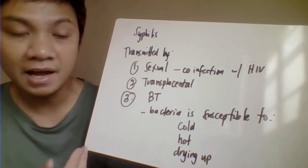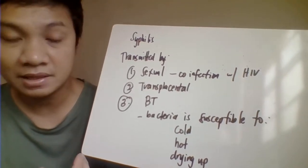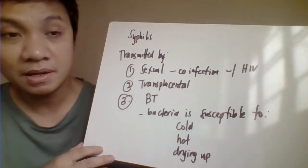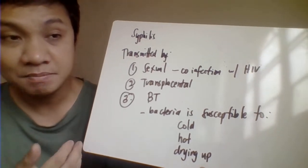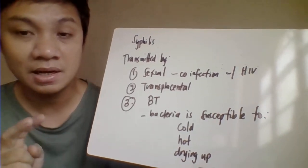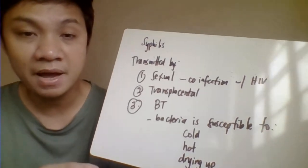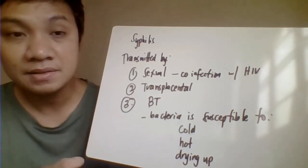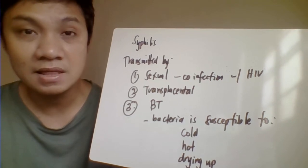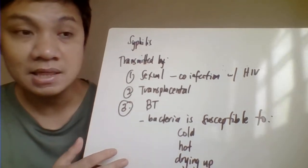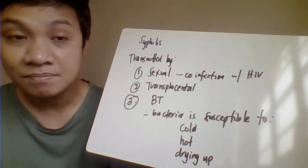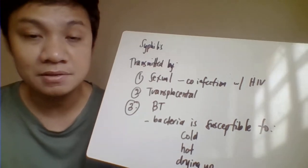The bacterium Treponema pallidum subspecies pallidum can be killed by hot temperature, cold temperature, or drying. Therefore, incidents of blood transfusion-transmitted syphilis have been reduced due to strict screening of blood bank donors and because the bacteria die at cold storage temperatures.